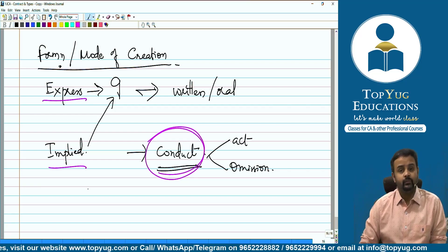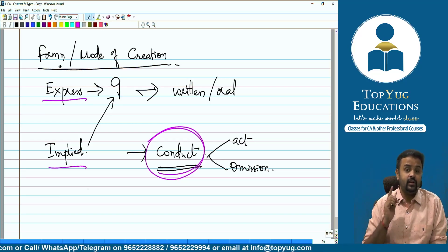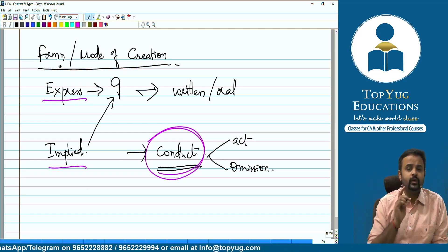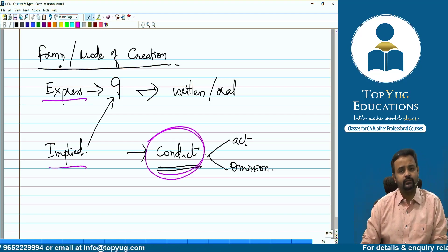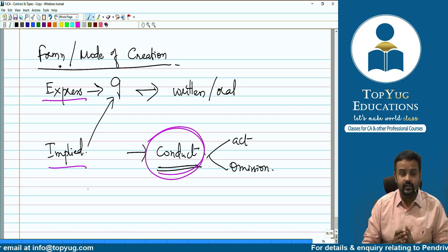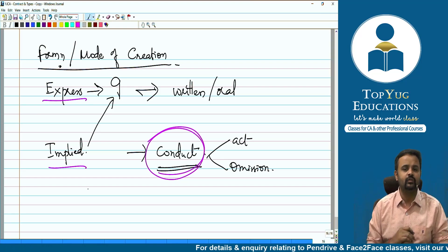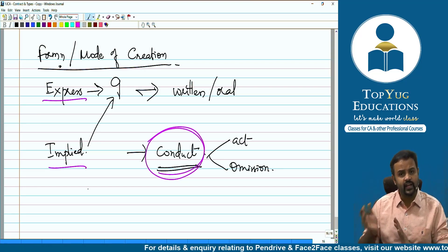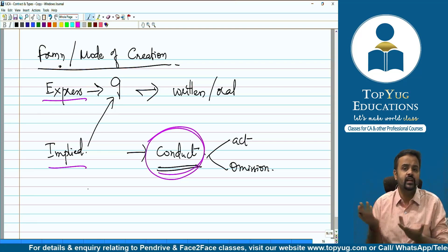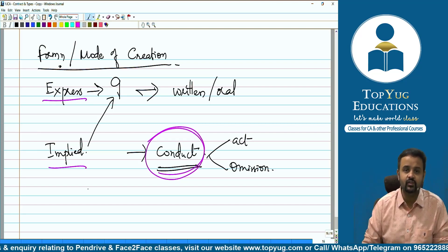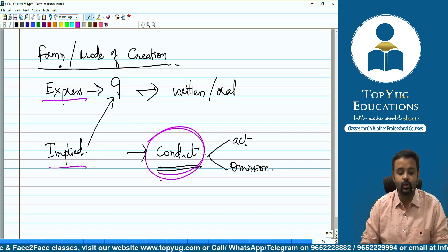Implied contract can also arise from omission. For example, if I say I will sell my car to Naman provided Herschel does not buy it within one week, and Herschel does not come to buy — then because of Herschel's omission of not buying the car, a contract between me and Naman comes into place. So by conduct — whether act or omission — a contract can be created. Express and implied contracts can both be valid contracts.